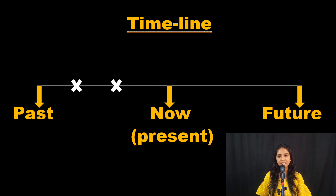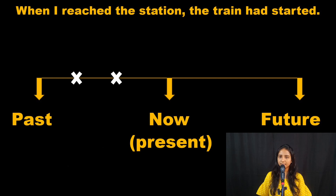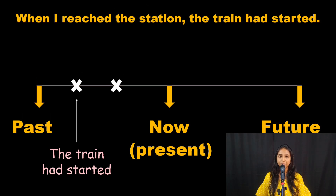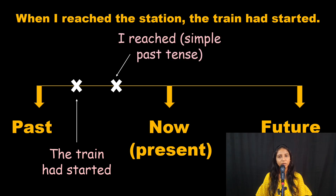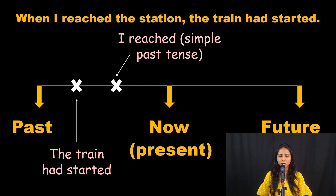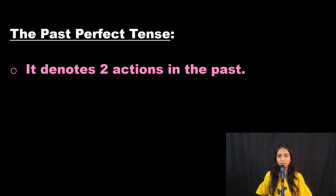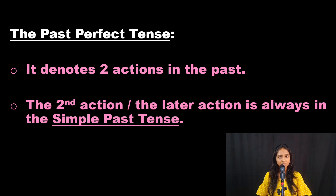Let's take the second sentence: 'When I reached the station, the train had started.' Which action takes place first? It is 'the train had started'. And I reached the station when the train started. So let's keep two things in mind: the past perfect tense denotes two actions in the past, and the later action is always in the simple past tense. That is how we identify which one to place first and which one second.